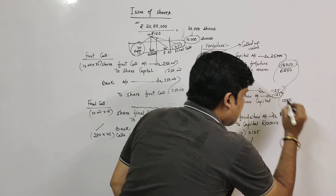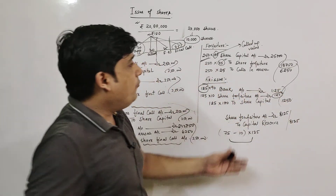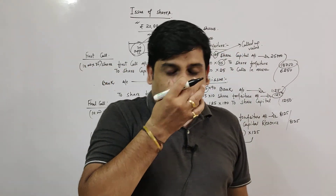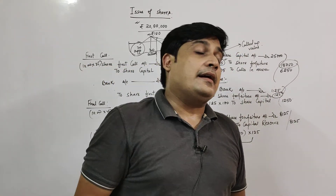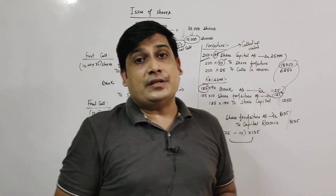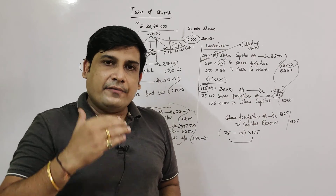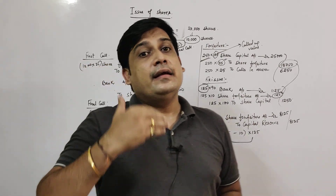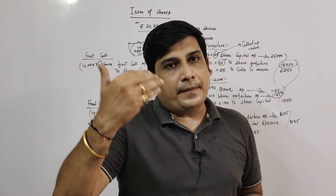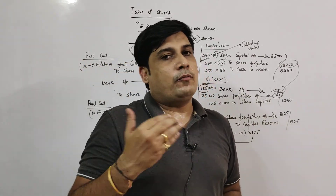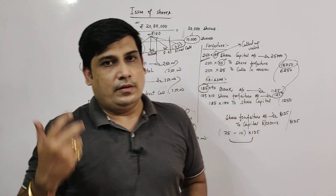In this way, I have taught you the four stages of share issue along with forfeiture and re-issue. There are still some things to learn — balance sheet, cash book — and as we move ahead I will keep solving different types of sums for you.